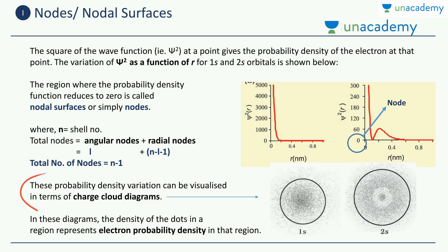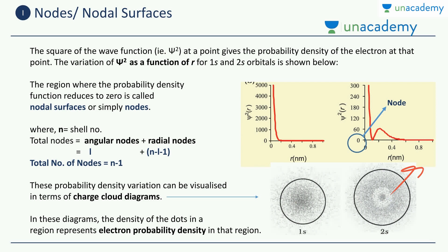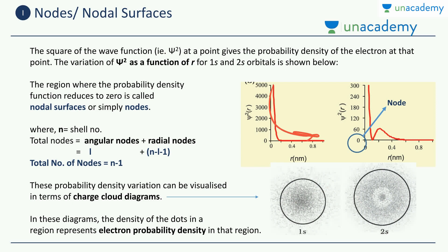These probability density variations can be visualized in terms of charge cloud diagrams. The density of the dots in a region represents the electron probability density in that region. You can see a whitish region that increases to a darker area — this matches the probability density profile shown for the orbitals. So these are the charge cloud diagrams for the 1s and 2s orbitals. This concludes our discussion about nodes and nodal surfaces.